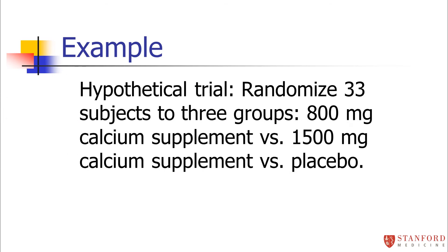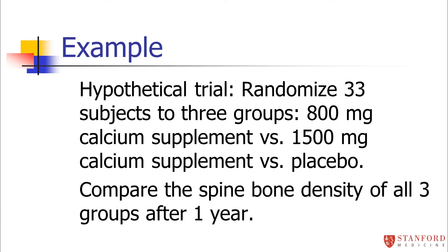Let me start with an example. Imagine we have a hypothetical trial where we randomize 33 subjects to three groups: 800 milligrams of calcium supplement, 1500 milligrams of a calcium supplement, or a placebo pill. The outcome we're looking at is spine bone density. We want to see if the most supplemented group ends up with higher spine bone density. We're going to compare their spine bone densities at one year, assuming all three groups started with roughly the same spine bone density.